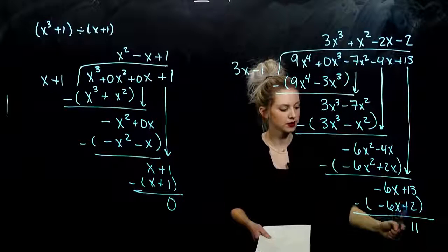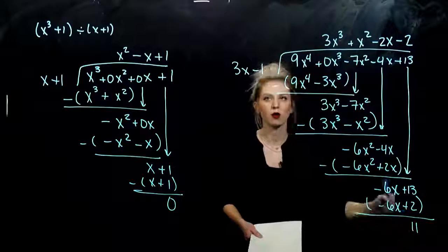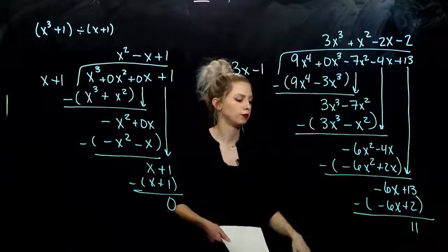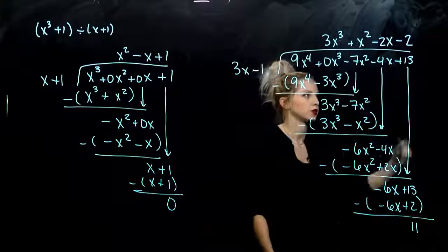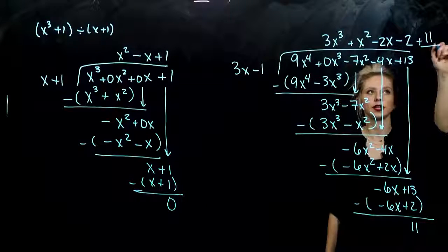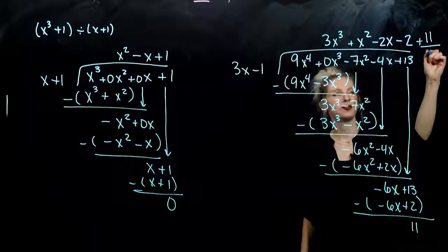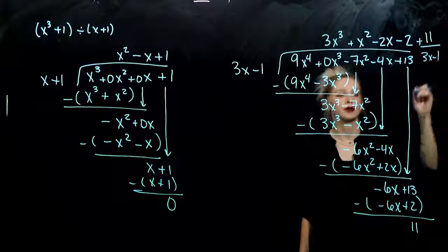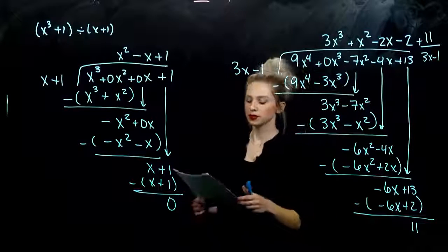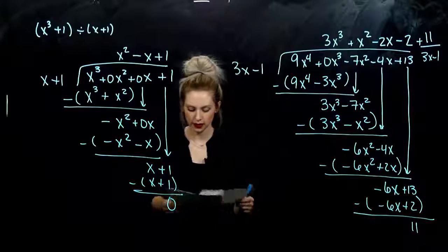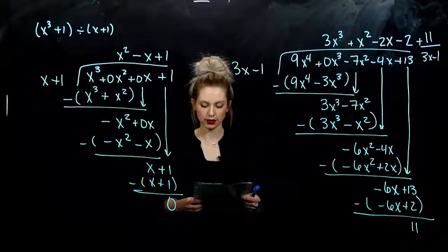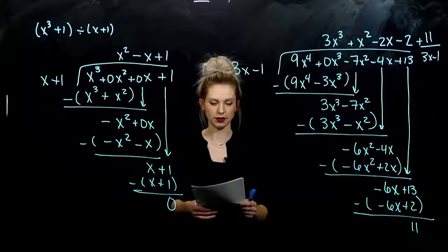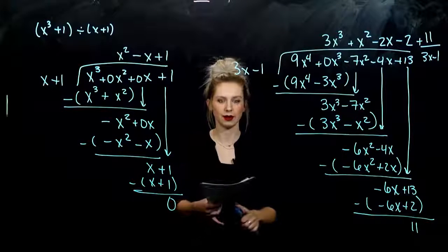We know to stop because the degree down here is zero and the degree up top is one. So we need to add on eleven, and that eleven still needs to be divided by three x minus one. So go ahead and take those last two problems: plug the holes and do the division, see what you get.